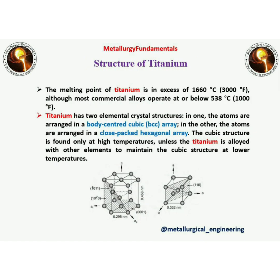Structure of titanium. The two crystal structures of titanium are commonly known as alpha, which refers to the HCP crystal structure, and beta, which refers to the BCC crystal structure. There are four classes of titanium alloys: alpha, near-alpha, alpha-beta, and beta.